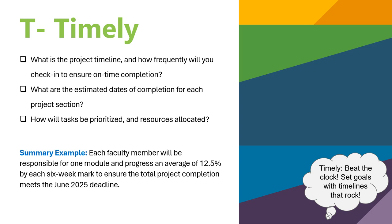Timely — beat the clock, set goals with timelines that rock. This sets the timeline parameters for completion of your project and includes specific dates and prioritization of task assignments. We can take the information collected on the measurable slide and add to it by considering: What is the project timeline and how frequently will you check in to ensure on-time completion? What are the estimated dates of completion for each project section, and how will tasks be prioritized and resources allocated?